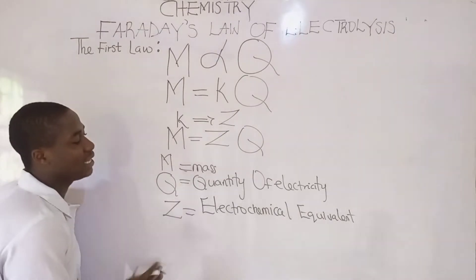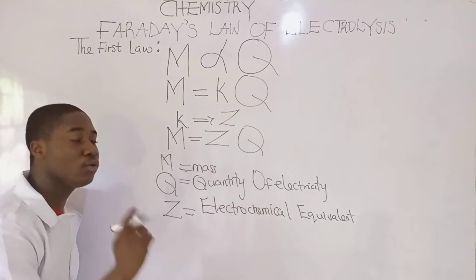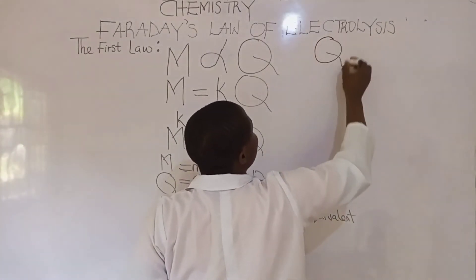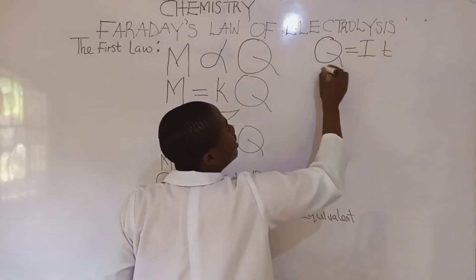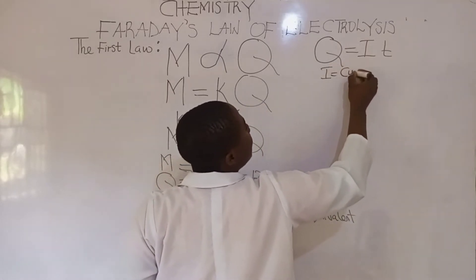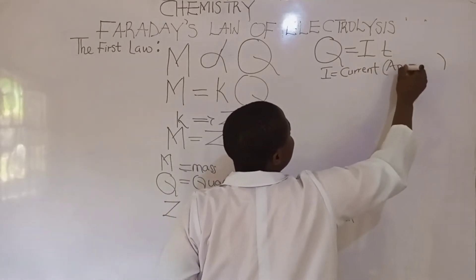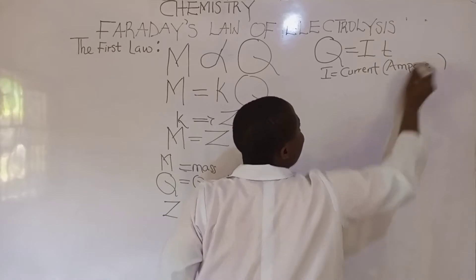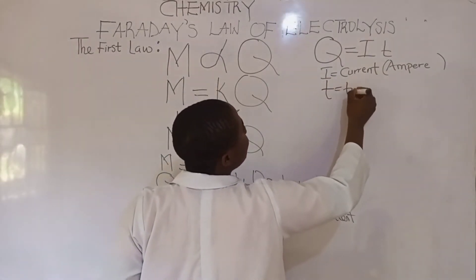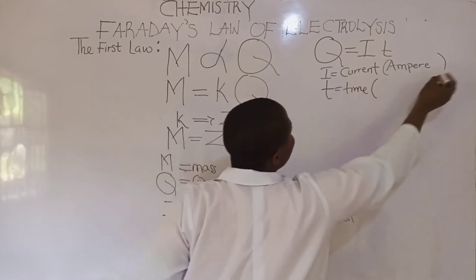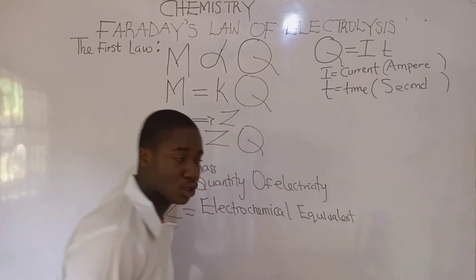It must be noted that Q, which is quantity of electricity, has its own formula: Q is equal to IT. I is current, and current should be in the SI unit of amperes. T is time, and time should be in the SI unit of seconds.